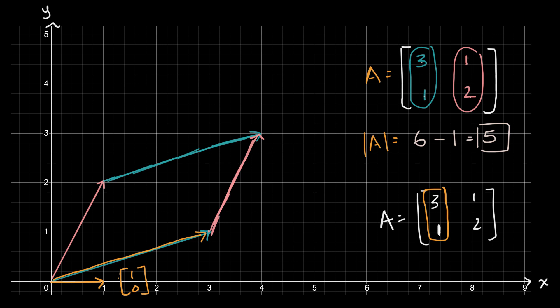And we know we have the other unit vector. Let's call this, this right over here, is the zero, one vector goes zero in the X direction, one in the Y direction. And the transformation matrix says, hey, turn that into the one, two vector.